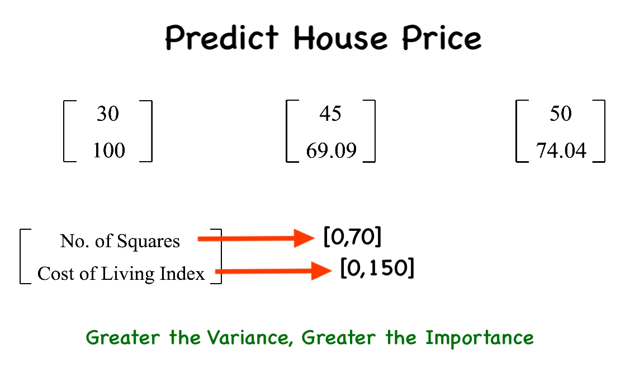Since the cost of living index has greater variance, it will be considered a more important feature than number of squares, which is not what we want. So, we bring them both down to a scale of 0 to 1 using unity-based normalization, also known as feature scaling.